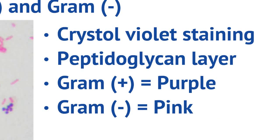Gram-negative organisms have a peptidoglycan layer, but on top of that it is covered by a phospholipid membrane, so the crystal violet cannot penetrate through to actually dye the peptidoglycan, so it appears pink. So gram-positive organisms are purple, gram-negative organisms are pink.